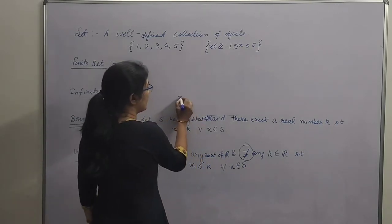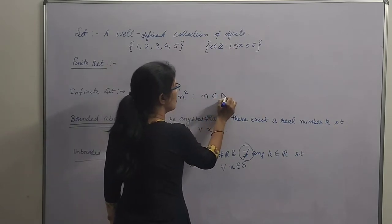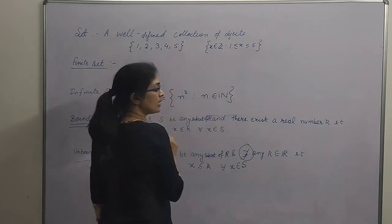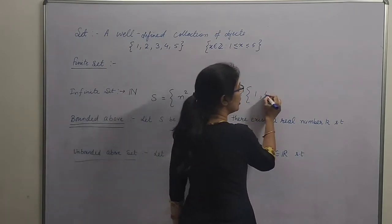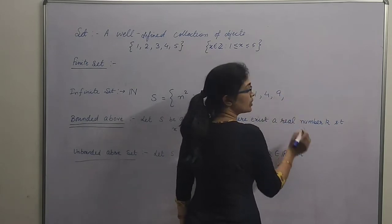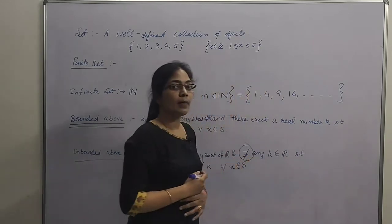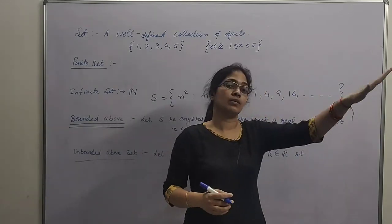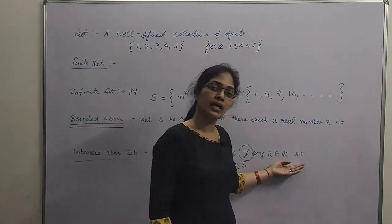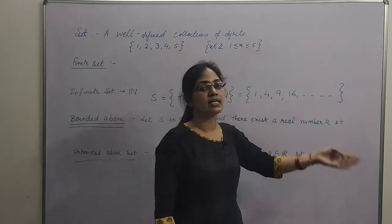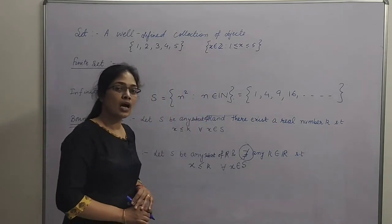Like, agar mein S = {n²} for n belonging to natural numbers. Kya ye set bounded above hai? Nahi. n=1 → 1, n=2 → 4, n=3 → 9, n=4 → 16, and so on. Ab isme har bade se bada natural number ka square hai. Toh hume aisa koi bhi real number k nahi milega jisse is set ke sare elements chhote ho jayen. Therefore, this set is not bounded above.